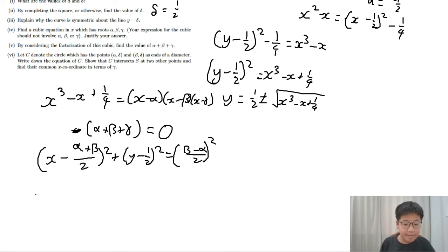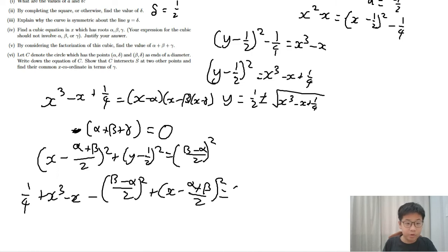And so c and s intersect when a quarter plus x cubed minus x. Since y minus half squared equals x cubed minus x plus a quarter, we substitute that minus beta minus alpha over 2 squared plus x minus alpha plus beta over 2 squared equals 0.